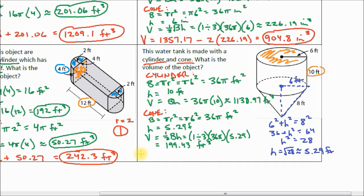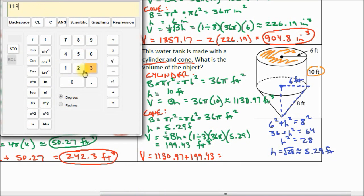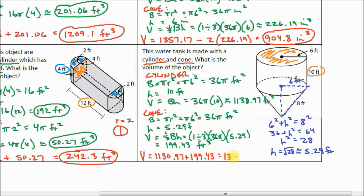Now all we need to do is add those two together. Our total volume is the volume of the cylinder plus the volume of the cone: 1130.97 + 199.43 equals 1330.4 feet cubed. And there is our answer for the volume of this water tank shape. Thank you.